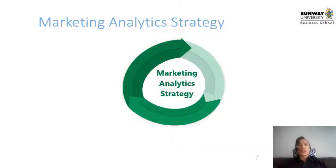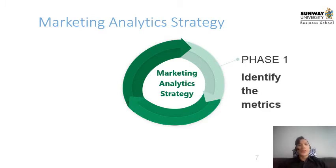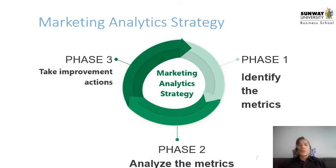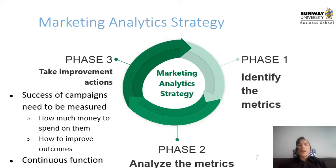The marketing analytics strategy works in a cyclical mode. Phase one is understanding the metrics we want to use to identify campaign success. In phase two, once we've identified the metrics, we analyze them. In phase three, we take improvement actions based on what the metrics tell us. Campaign success must always be measured — how much money we spend, and how to improve outcomes — as it is a continuous function of review, identification, and applying necessary changes.